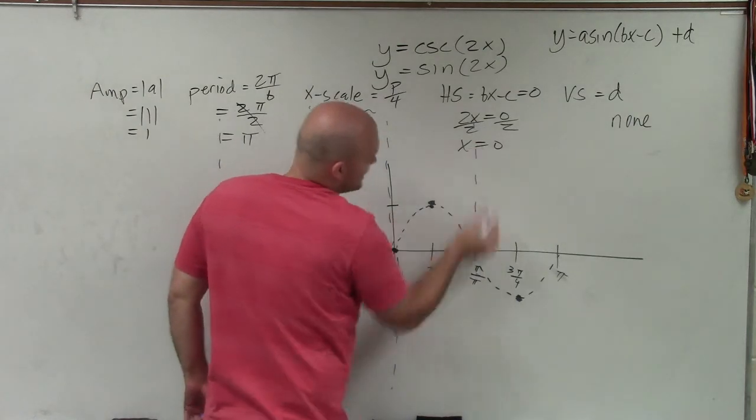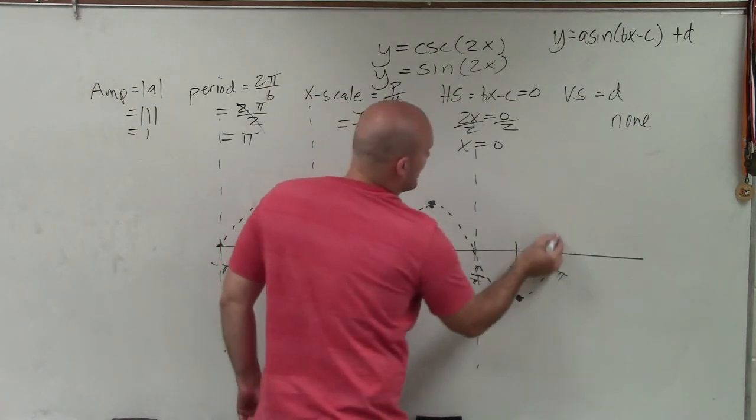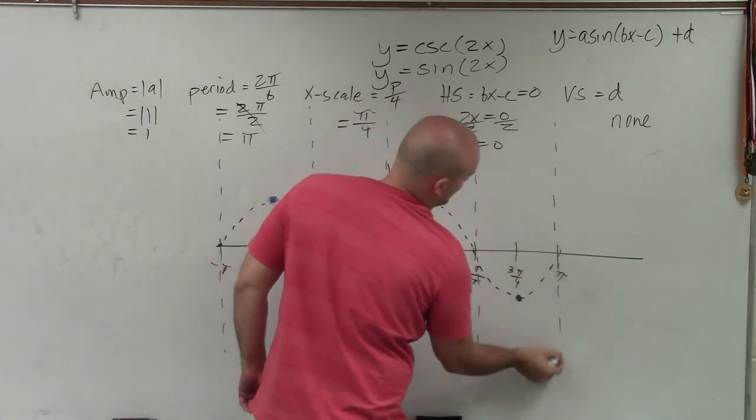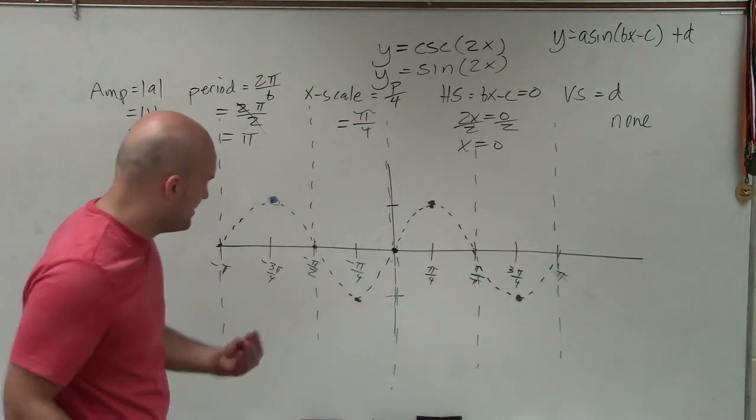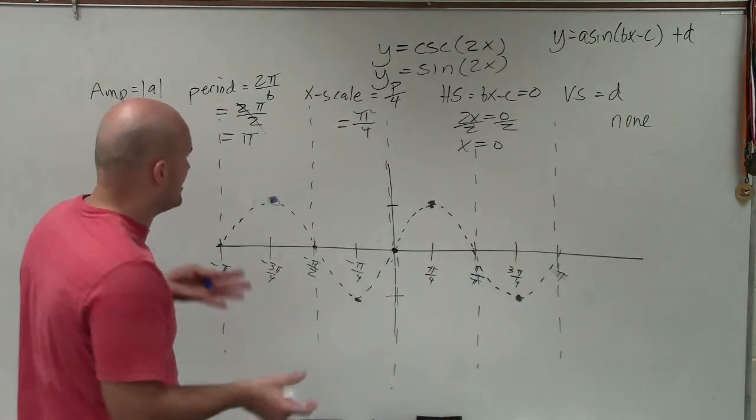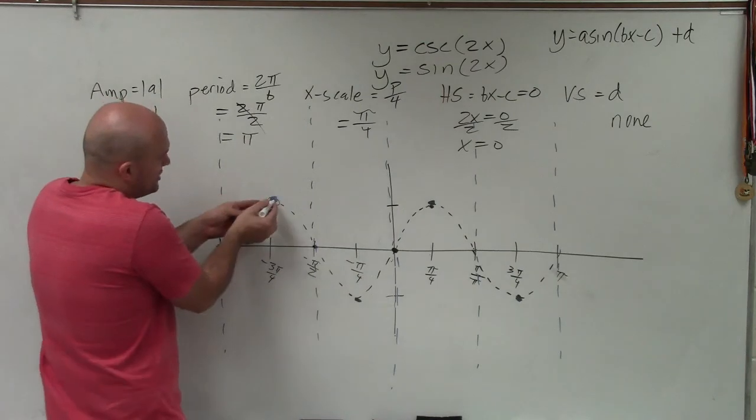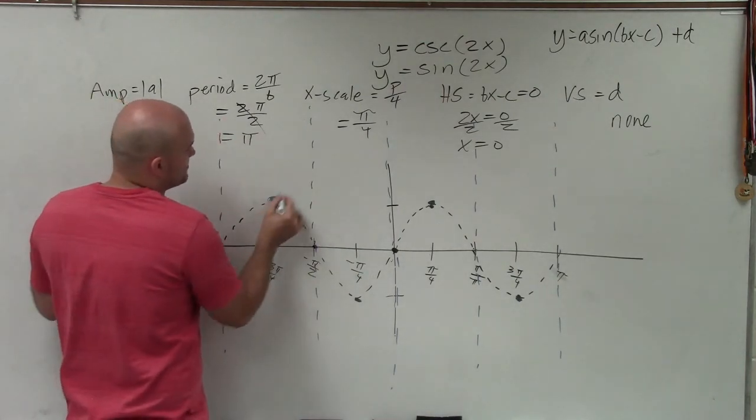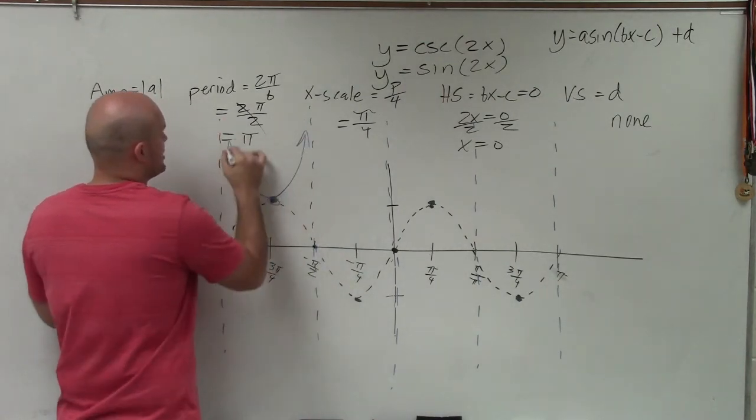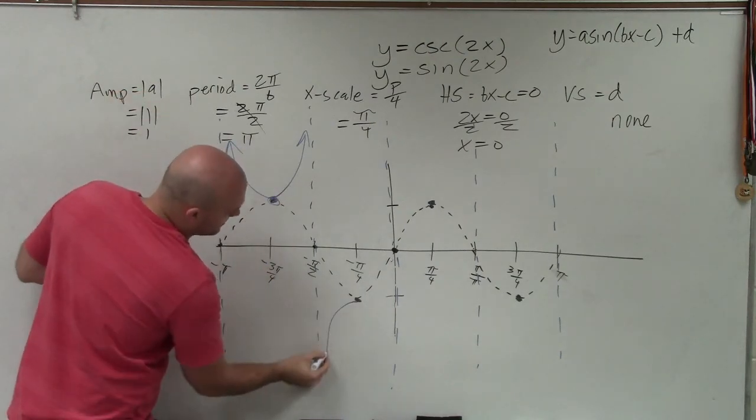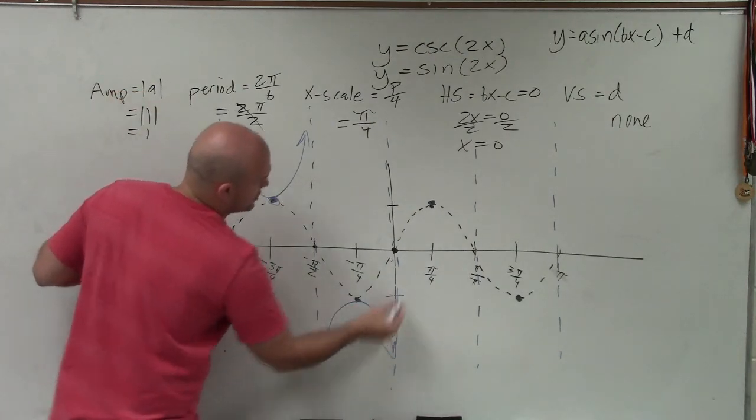Now remember, asymptotes are where the graph is going to approach. So basically, we're not going to get, I don't want to get too detailed as far as the exact points. But since I told you they share these points, now they need to approach both these asymptotes. And really, they kind of take shape of a little parabola approaching each asymptote.